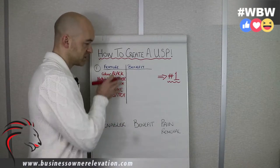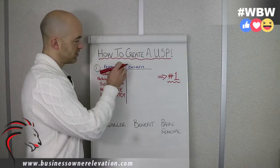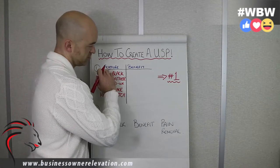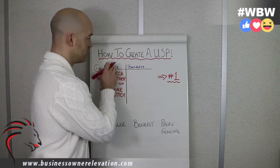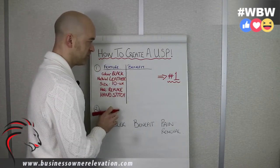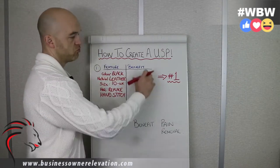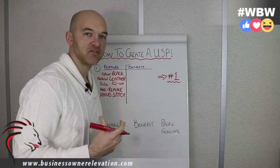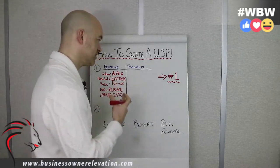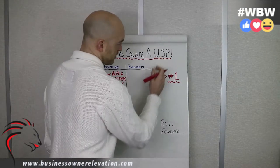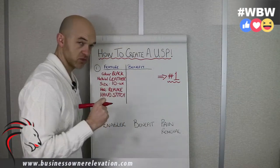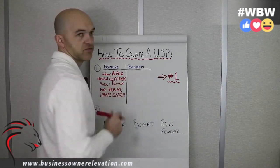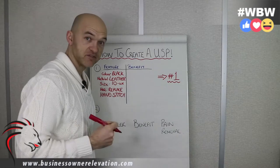Now, what you've got to do is get a sheet of paper, put a line down and then across. List all of your features. And then what you've got to do is list all of the related benefits. This is important because ultimately your USP comes off the back of benefits.